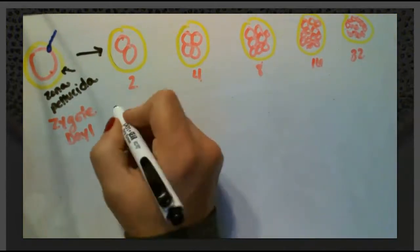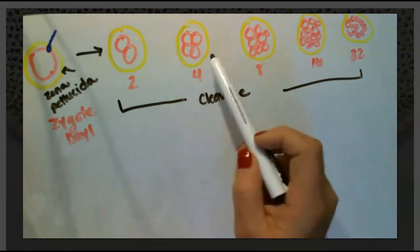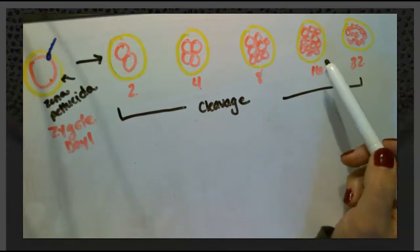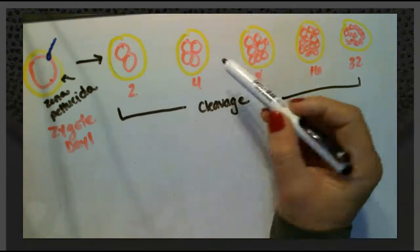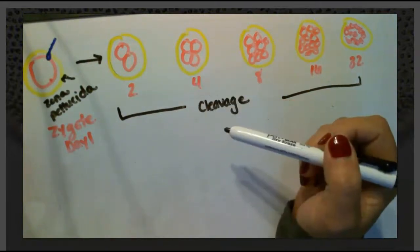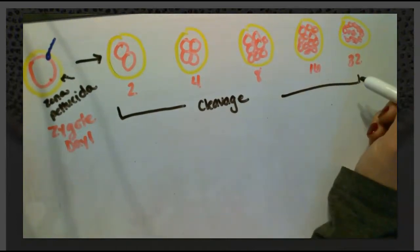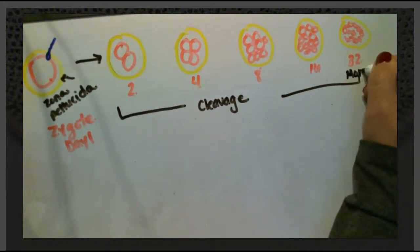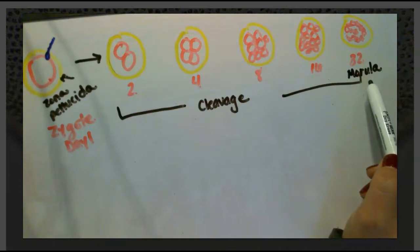This process of rapid cell division is called cleavage. Interestingly, even though we have all these cells being duplicated, the overall ball — a sphere of cells — doesn't get any bigger. It stays the same size; we're just increasing the number of cells inside. When we reach the 32-cell mass, it starts to look different, kind of like a mulberry, which is what the Greek word for it means. So we give it a new name: the morula.